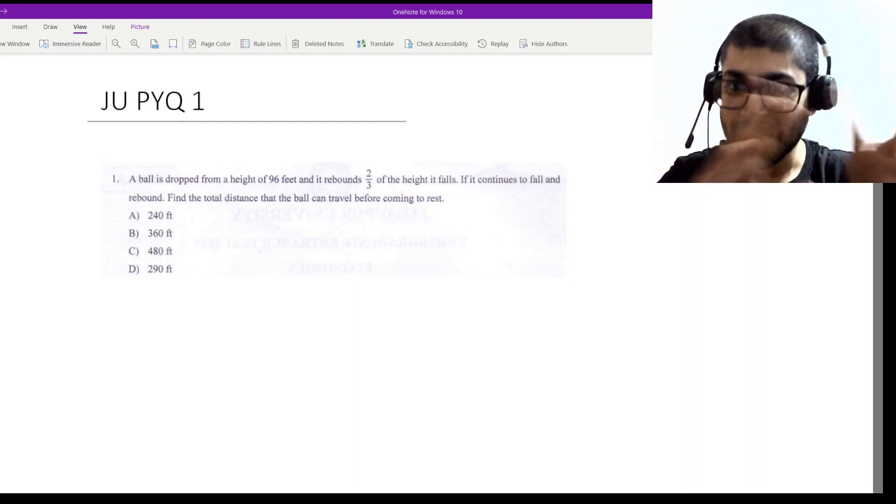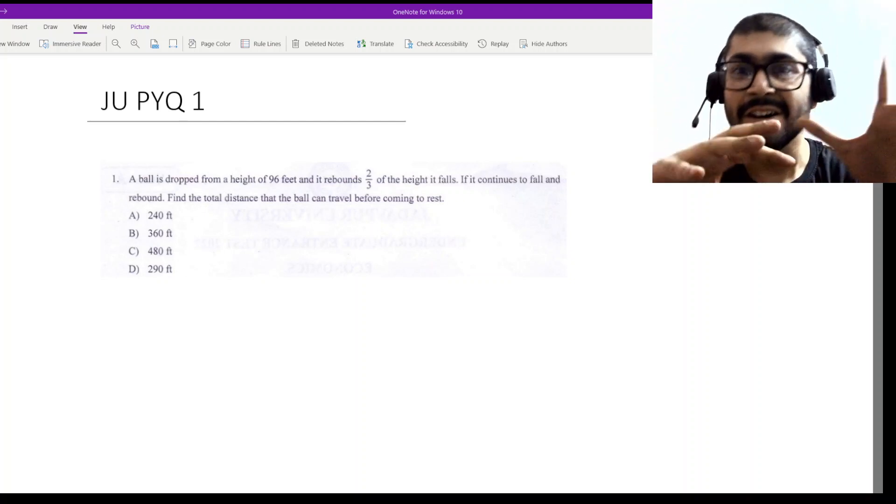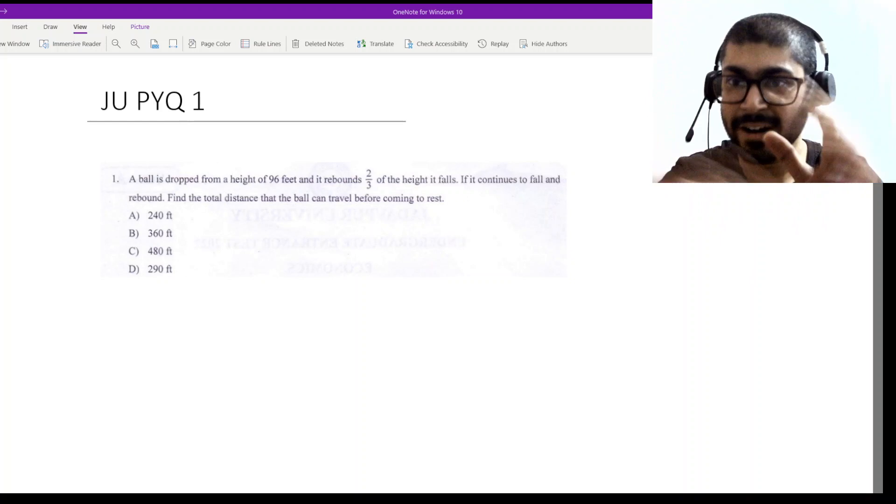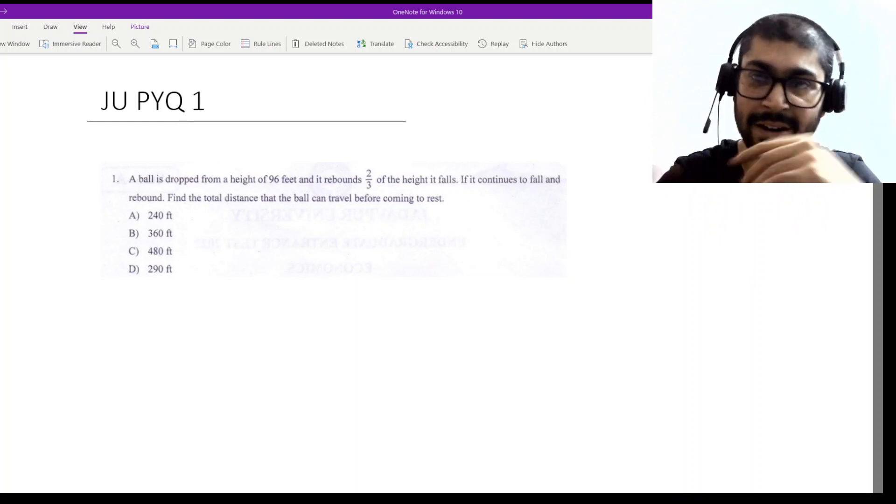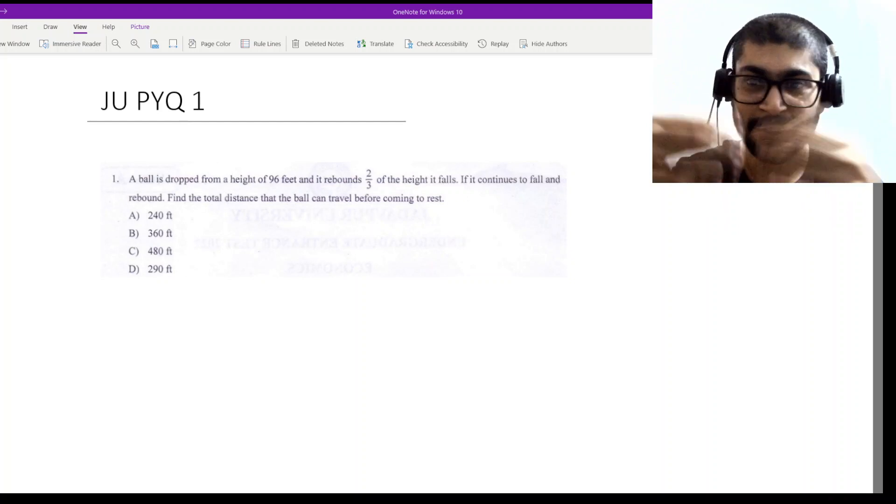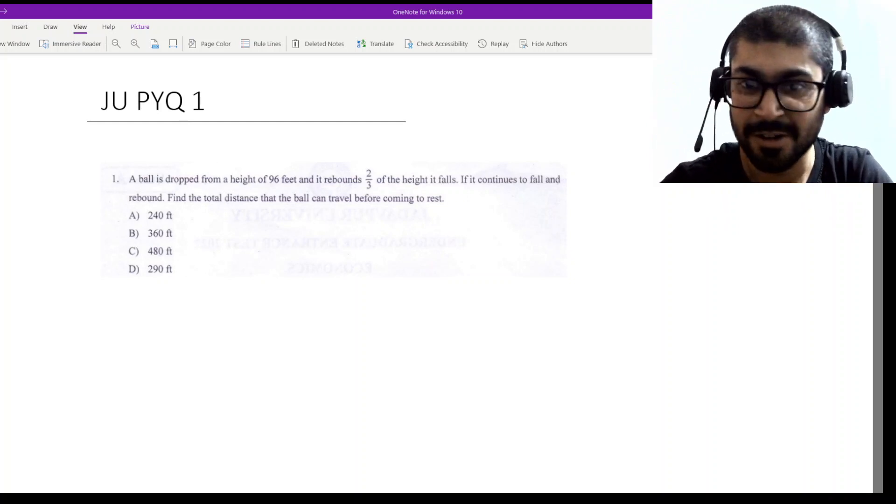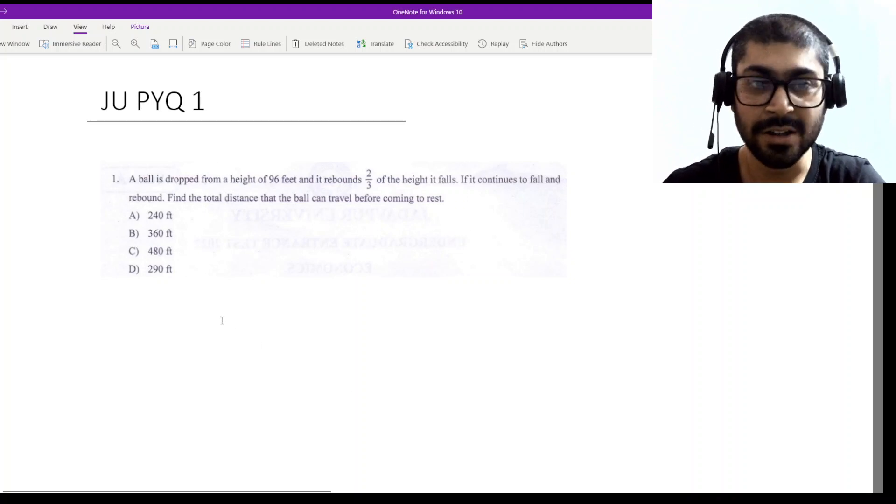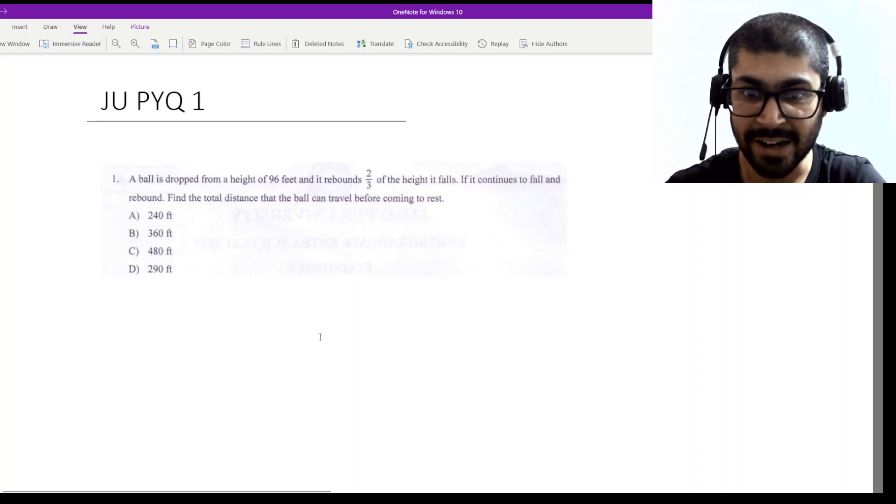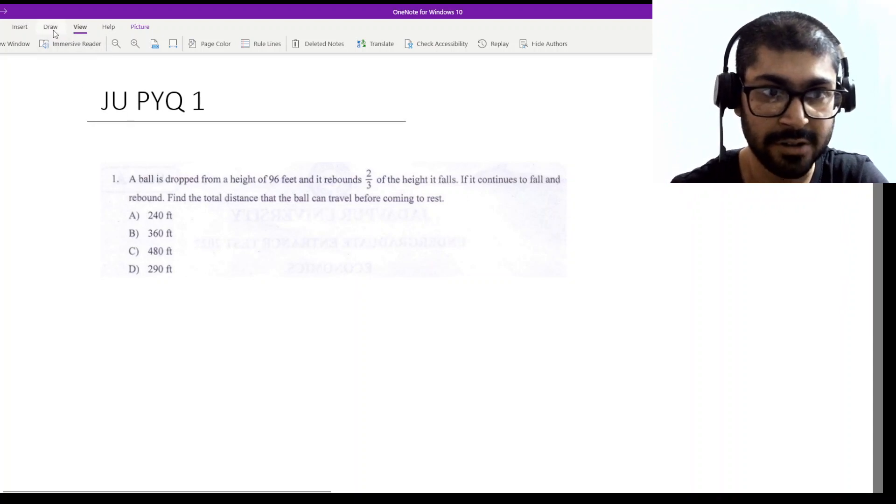I will be able to select different questions from different chapters and provide you solutions for a variety of problems so that at least the major portion of syllabus gets revised. I will be talking through these videos in English and Bengali, so you can skip the relevant parts and use the translations as you desire. Let's go. The first problem: A ball is dropped from a height of 96 feet and it rebounds 2/3 of the height it falls.